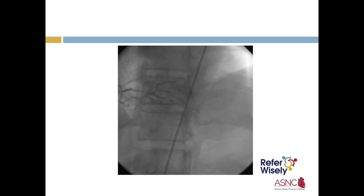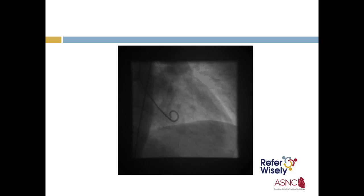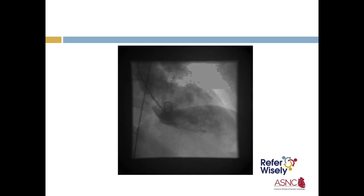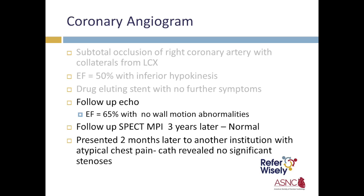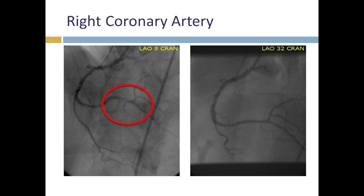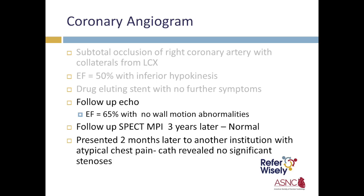Three years later, he underwent SPECT myocardial perfusion imaging, which was normal — considered appropriate based on the AUC criteria. However, two months later, he presented to another institution with atypical chest pain. Despite the normal SPECT MPI, coronary angiography was carried out there, showing no significant stenosis, reinforcing the value of serial SPECT imaging in patients with chronic coronary artery disease.